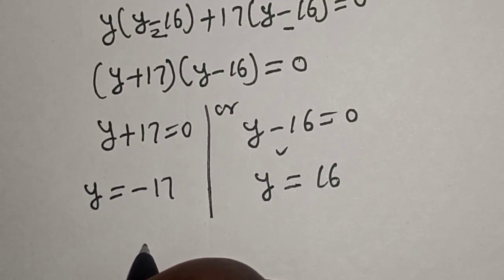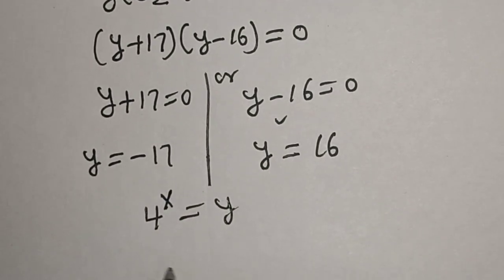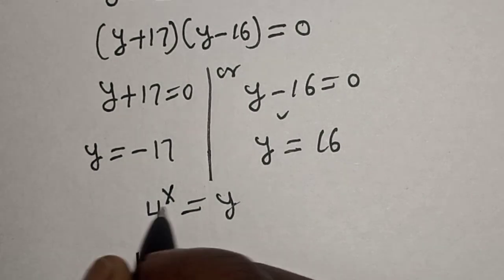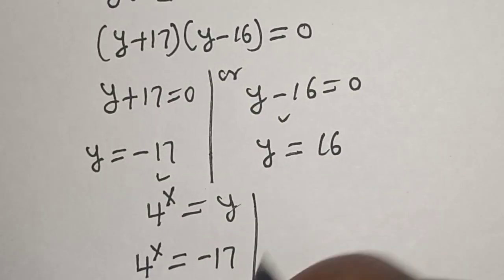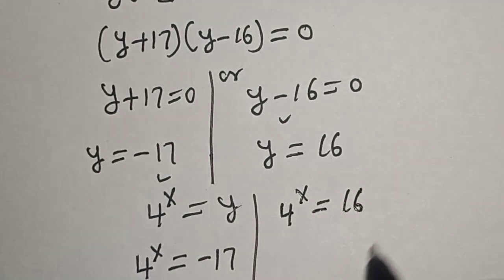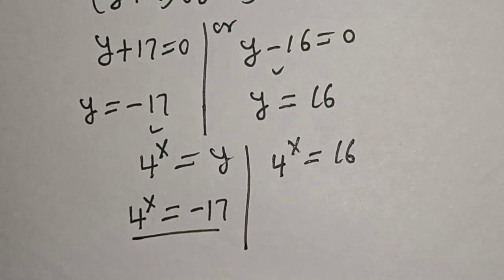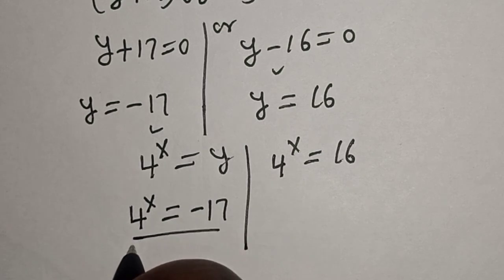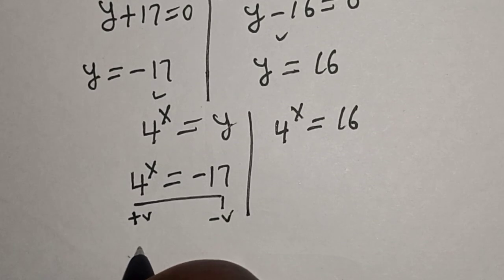Since 4 raised to power s is equal to y, we consider both values. For y equal to minus 17: 4 raised to power s cannot be equal to a negative number because 4 raised to any power is always positive. So this case is rejected.